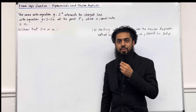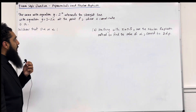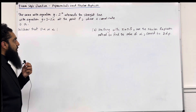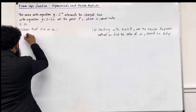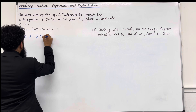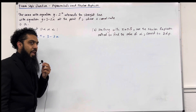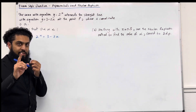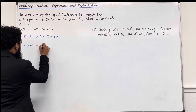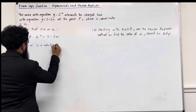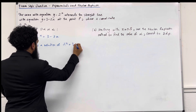Let's have a look at the solution to part A. We are told that y equal 2 to the power x intersects y equal 3 minus 2x at the point P. This implies that at P, 2 to the power x is equal to 3 minus 2x. The x coordinate of P is alpha, which implies that x equal alpha is a solution of the equation 2 to the power x equal 3 minus 2x.